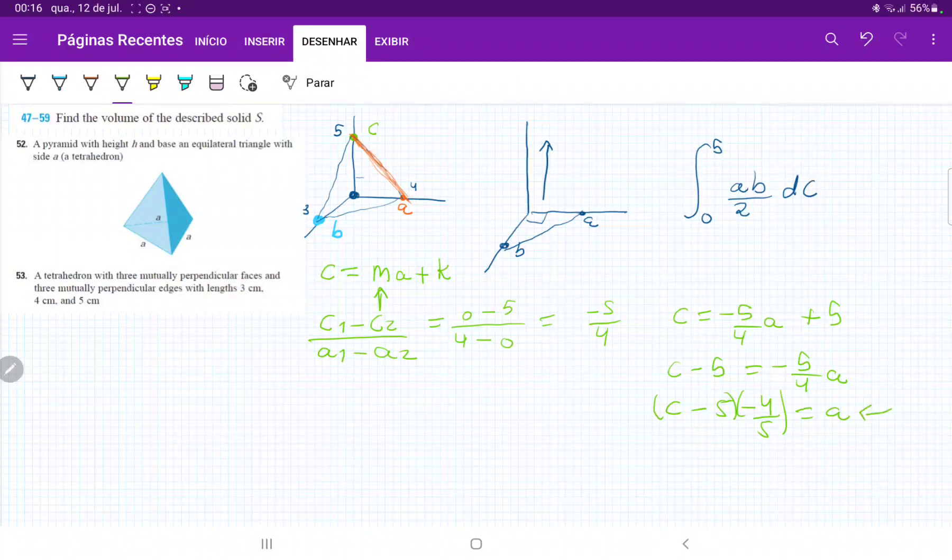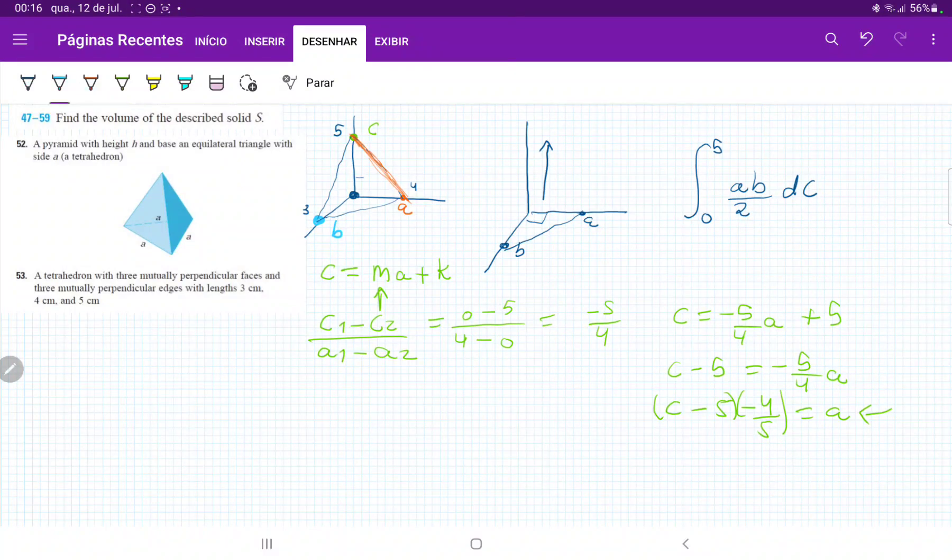So now we have an expression for A in terms of C, and now let's find an expression for B in terms of C. And so for B, we're going to have the same idea, but now we're going to have here C is equal to MB plus K, where we're relating how C is related to B. So once more, we're just doing this idea of the slope.